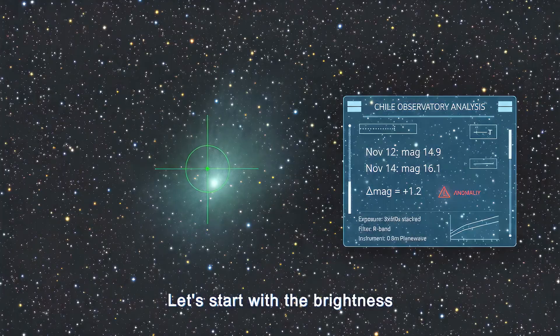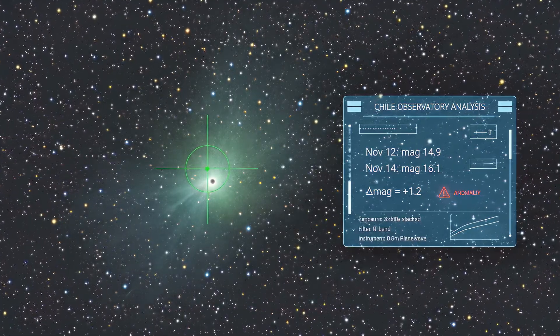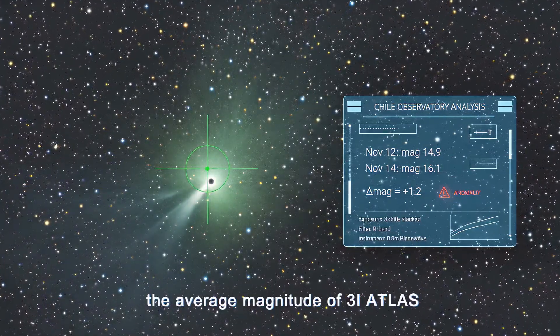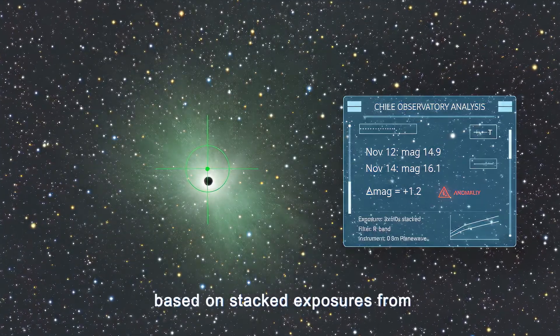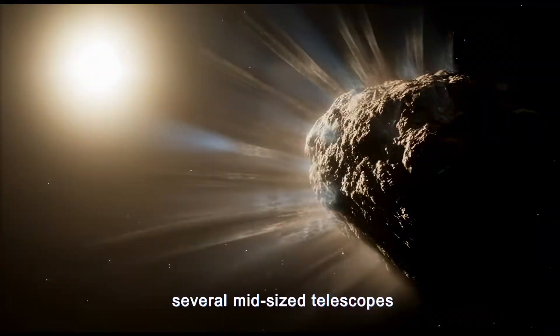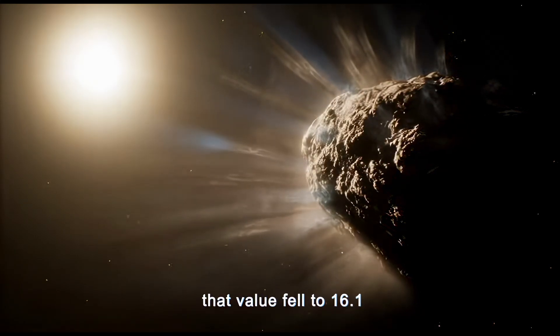Let's start with the brightness drop, because that's the first thing observers noticed. On November 12th, the average magnitude of 3i Atlas was about 14.9, based on stacked exposures from several mid-sized telescopes. Two nights ago, that value fell to 16.1.